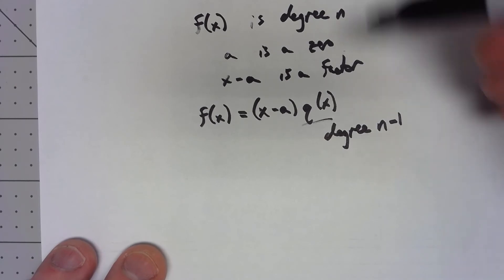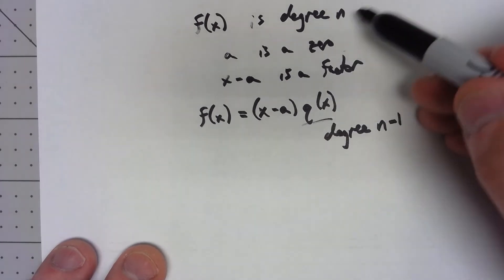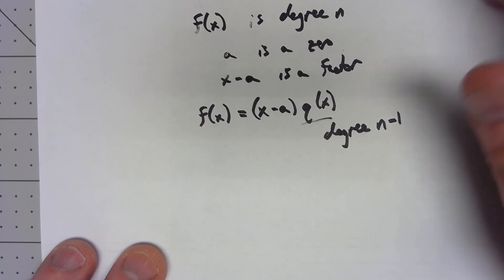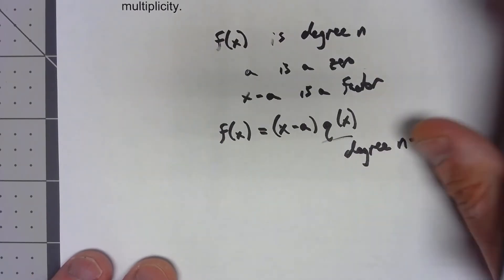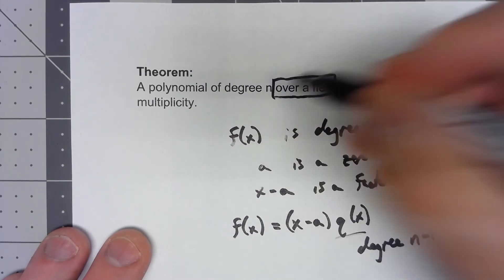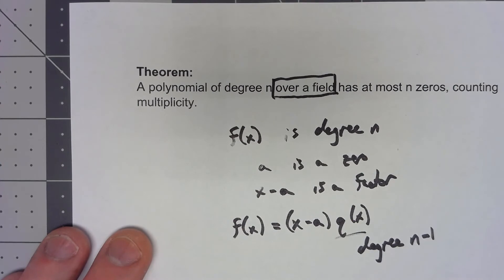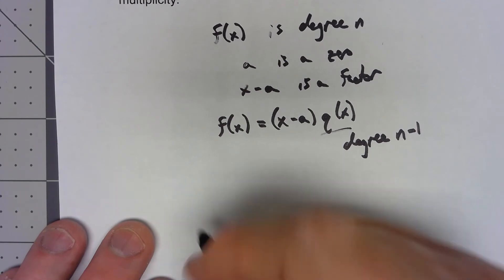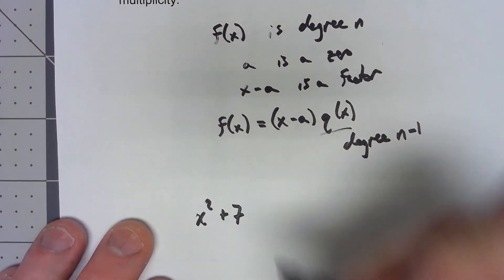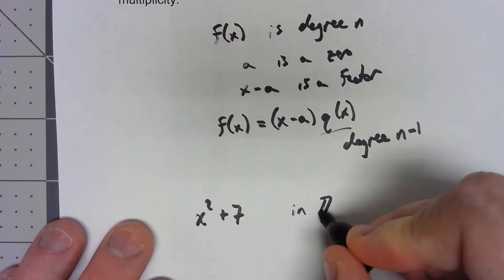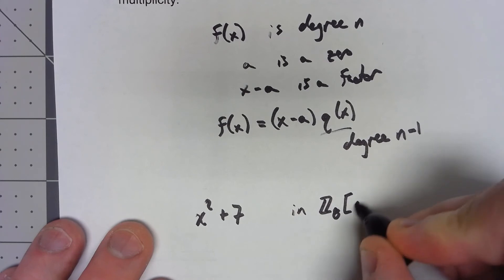So just a simple little inductive argument says that f(x), a degree n polynomial, has at most n zeros. However it's important to realize, and honestly all these things with division algorithm stuff has to be over a field, but it's very easy to see here why. Let's take a look at the polynomial x squared plus seven and let's look at that where in Z₈[x]. Obviously however Z₈ is not a field.